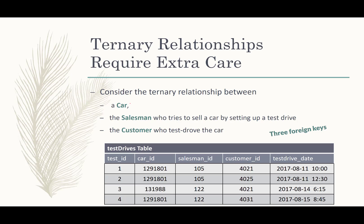A ternary relationship is a relationship between three entities. For example, consider test drives involving a car, many customers, and many salespeople. The salesperson will run a test drive with a particular car and a particular customer. In a relational database, you'd have a table for all this — the primary key might be a test ID, with three foreign keys: one to the car ID, one to the salesman ID, and one to the customer ID. The relationship itself might also have an attribute like the date and time of the test drive.